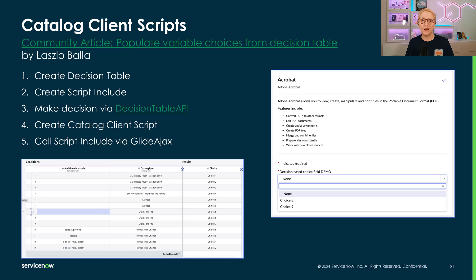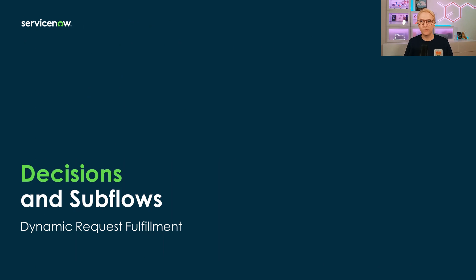I highly encourage you to check out his article — it'll be listed in the resources below. One of the most powerful combinations for decision tables is with dynamic subflows. We can not only determine decision result columns for groups, users, strings, choices, and other simple field types, but we can also output a reference result for the sys_hub_flow table, which houses all flows and subflows.